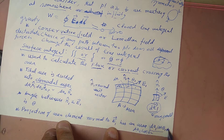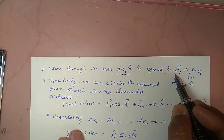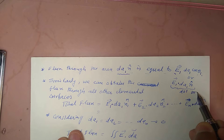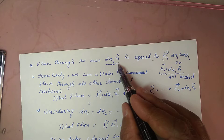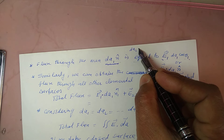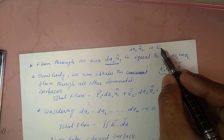The flux through area element dA1 is equal to E1 dA1 cos(theta1), which can be written as the dot product E1 · dA1. Similarly, the flux through dA2 is E2 · dA2. By adding all these contributions from each area element, we obtain the total flux as the sum of all Ei · dAi terms.